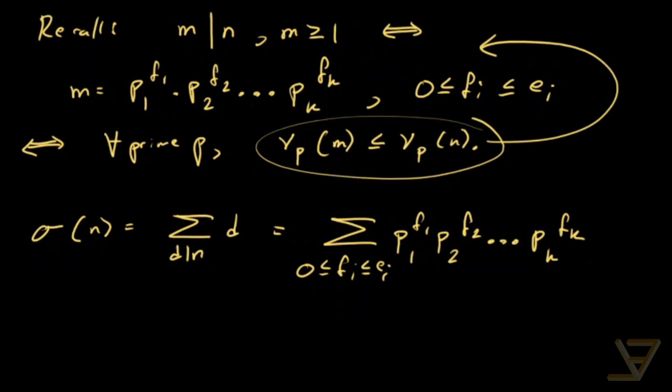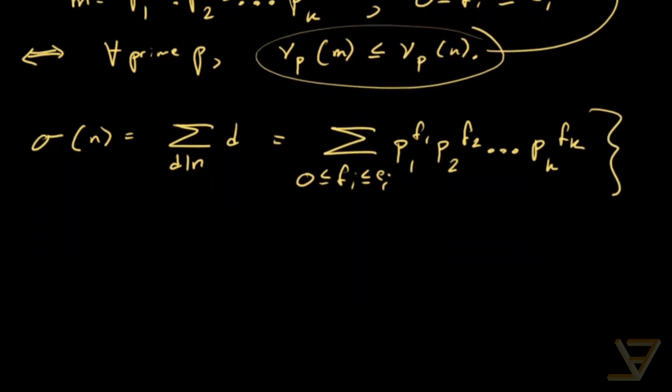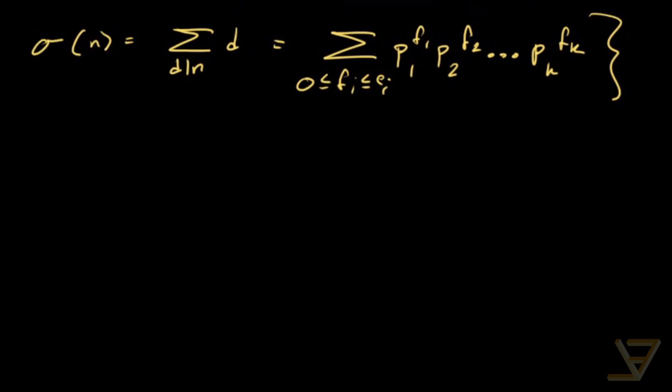So this looks like a mess, but you can actually show that this is equal to, sorry it's equal to, it factors very nicely. It's 1 plus p1 plus p1 squared all the way through to p1 to the e1, and you keep going.